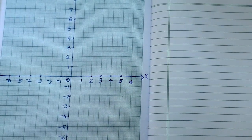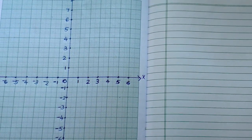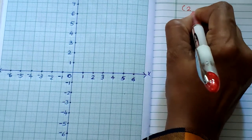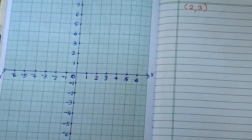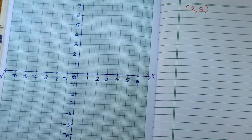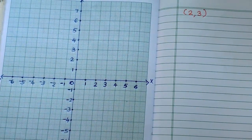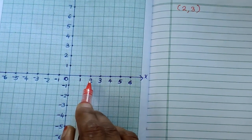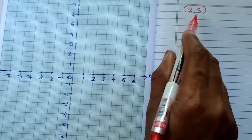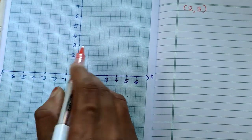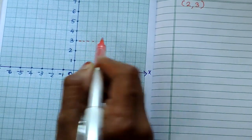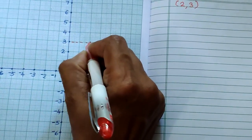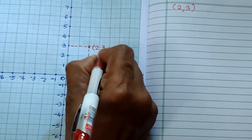Next, I am going to explain how to plot a point on a graph sheet. The first point is (2, 3). Here both coordinates are positive, so the point lies in the first quadrant. The x coordinate is 2, so we take 2 on the x-axis. The y coordinate is 3, so we take 3 on the y-axis. Draw perpendicular lines, and they will meet at a point — that point is (2, 3).